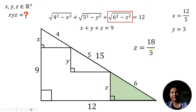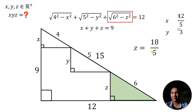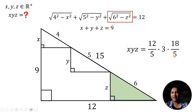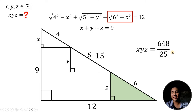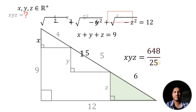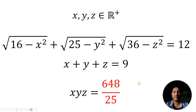Our goal is to find the product of x, y, and z. So we have 12 over 5 times 3 times 18 over 5. Multiplying all these numbers together: 12 times 3 times 18 all over 25. Now 12 times 3 times 18 gives us 648. Therefore, our answer to this Olympiad problem must be equal to 648 over 25. And we are done.